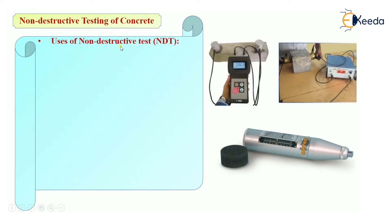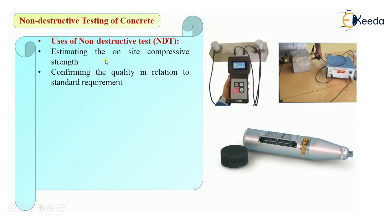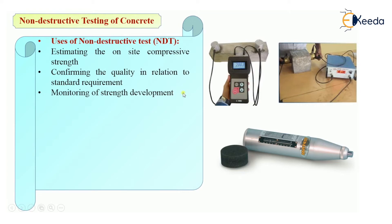Now let's see the uses of NDT. First, estimate on-site compressive strength — if you want to find out in-situ or on-site compressive strength of already constructed structures, we can use NDT. Second, confirming quality in relation to standard requirements — for example, if a standard specifies compressive strength, flexural strength, or no cracks or voids, we can confirm whether the structure meets those standards. Third, monitoring of strength development — how the structure is developing strength with time can be monitored.